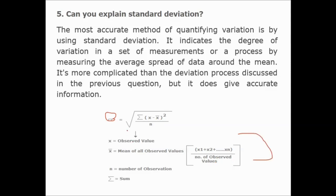N is the number of observations and sigma represents the sum. This was the content of a few questions that are asked in Six Sigma, and I hope you will benefit from it. Thank you so much.